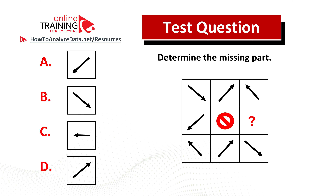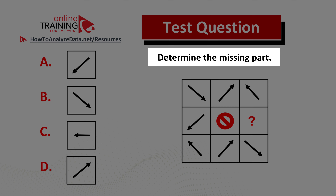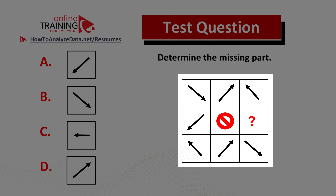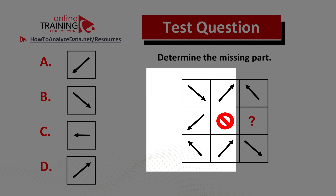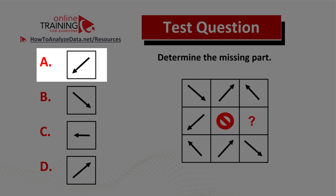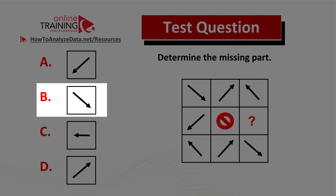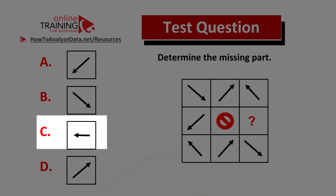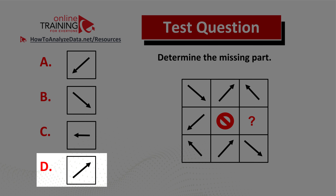Some of you might find this question tricky, but you will be excited to learn the solution to this real-life assessment test question. Determine the missing part. You are presented with a 3x3 square with arrows pointing in different directions. In the middle of the square you have an X sign, and one of the squares is missing the arrow. Choice A: arrow pointing in the bottom-left corner. Choice B: arrow pointing in the bottom-right corner. Choice C: arrow pointing left. Choice D: arrow pointing in the upper-right corner.